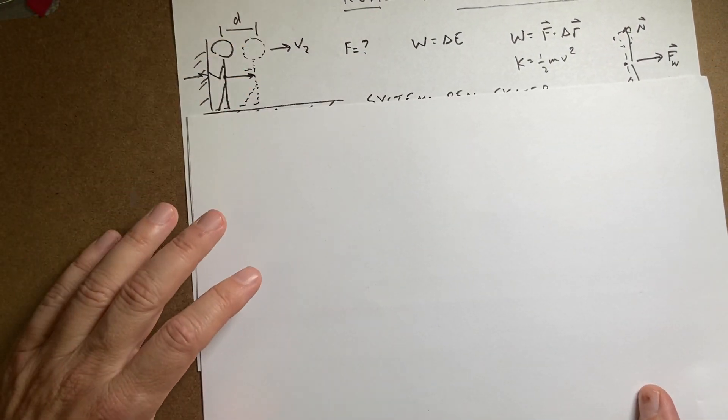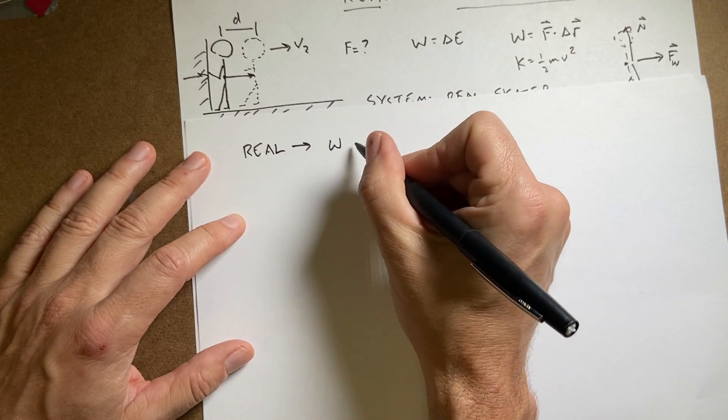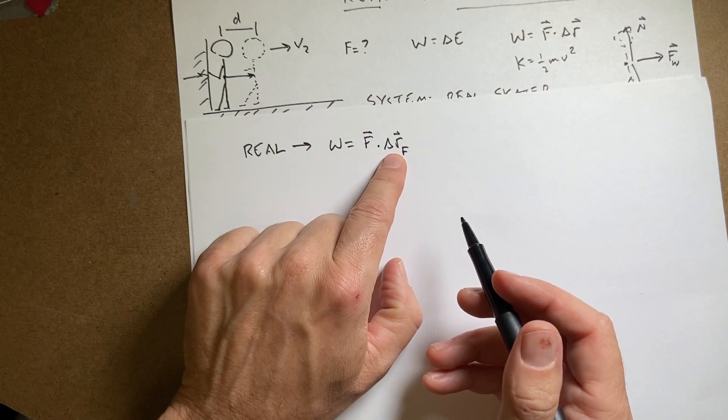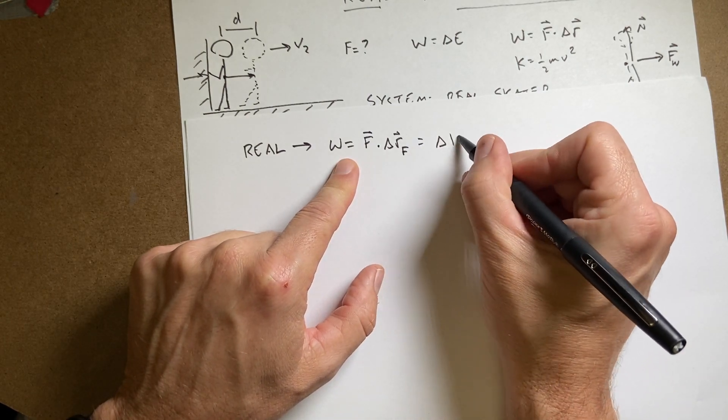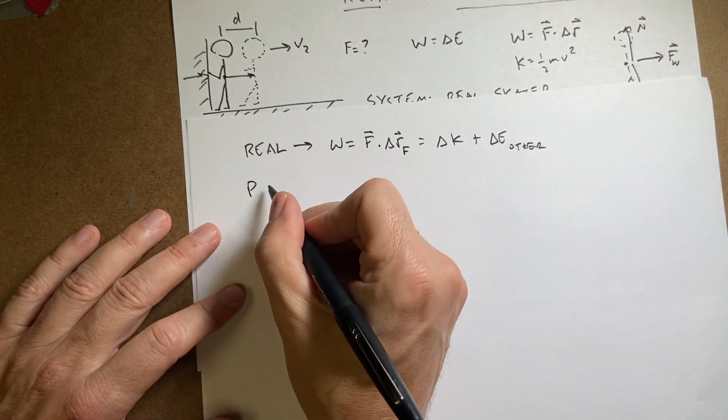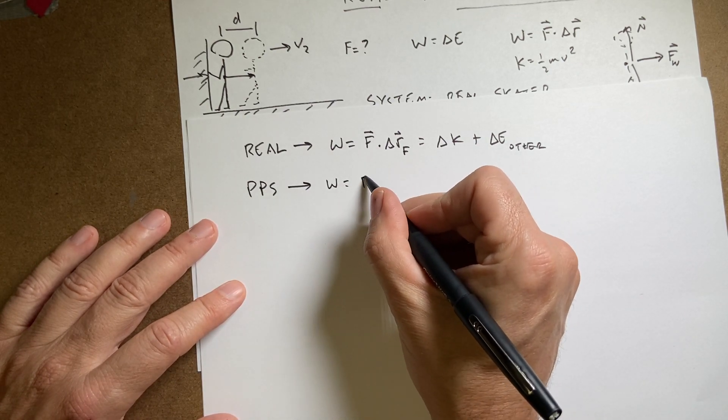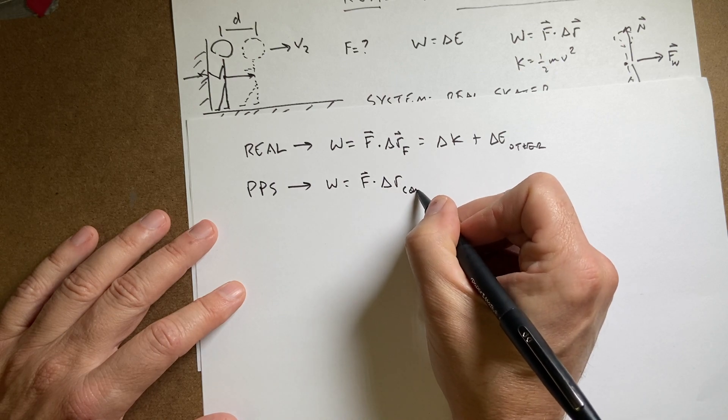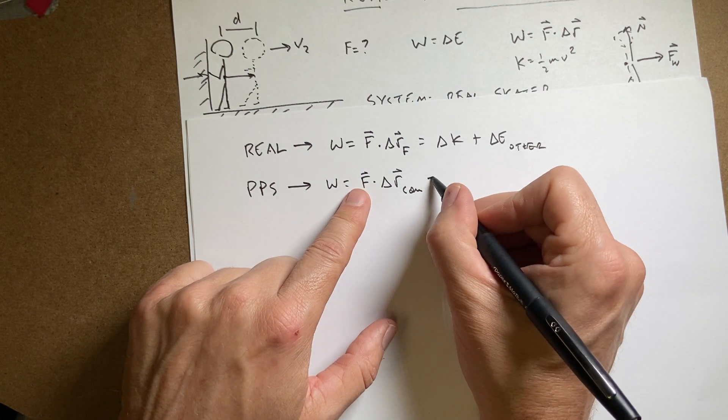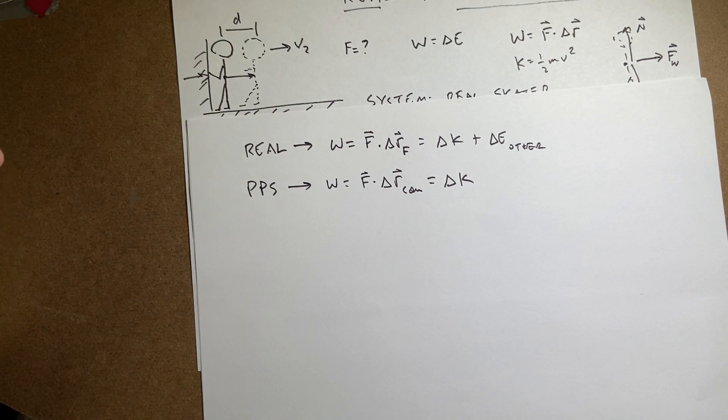So let's do a point particle system. We're going to do the same thing. For the difference between a real and a point particle system, so in a real system, I have work equals F dot delta R_F. Whatever that, however far that force moves is the work. And that's going to be the change in kinetic energy plus change in other energies. If I have a point particle system, a PPS, then I have work equals F dot delta R_center of mass. Even if the force doesn't actually move that way, I'm going to say that it does. However, doing that, I only have a change in kinetic energy. I can't have any other types of energy because I'm assuming the system is a point.